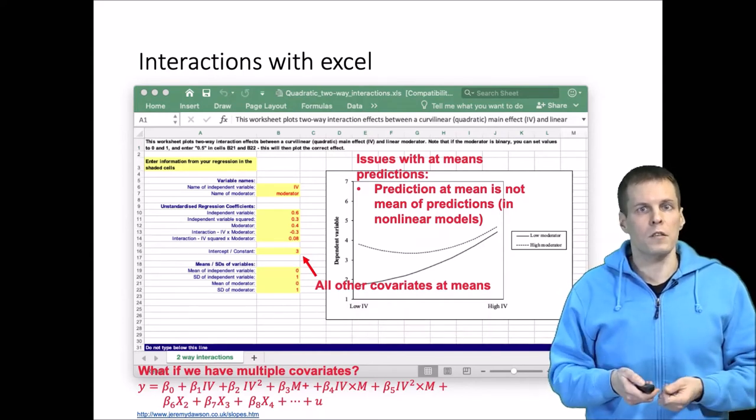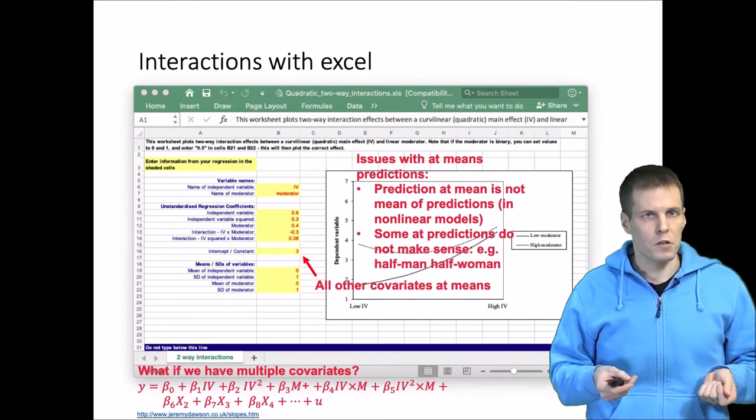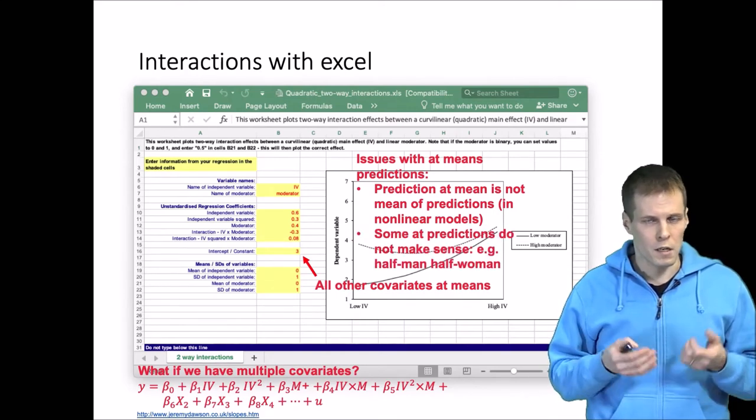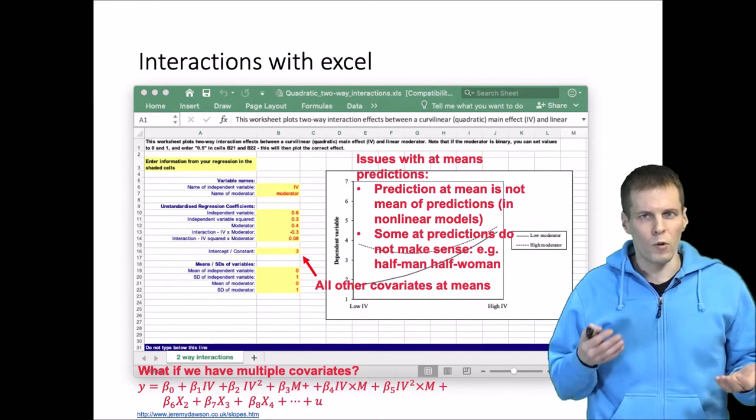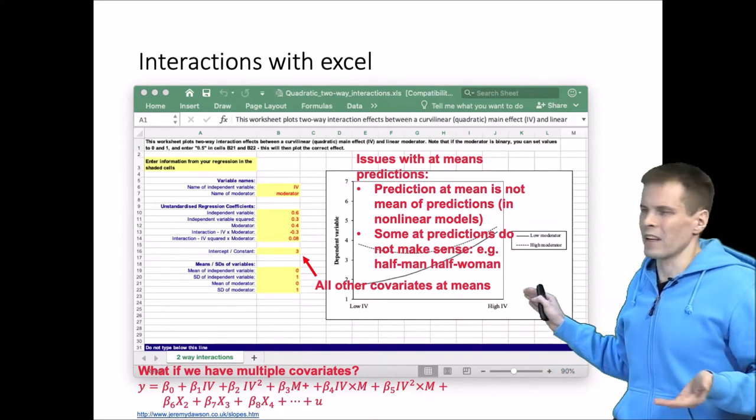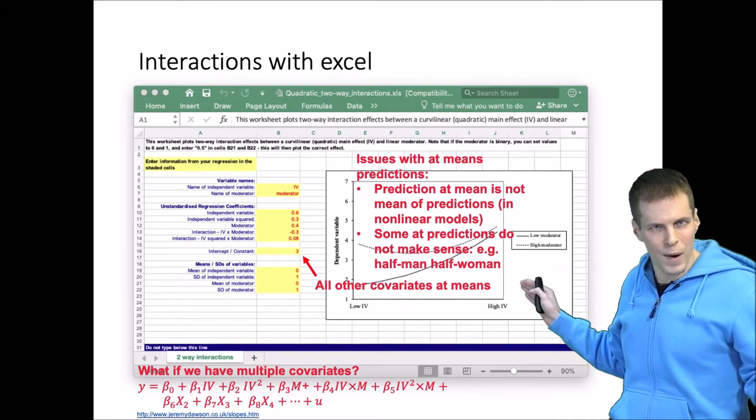Which brings us to the second issue, which is that some of these predictions that you would calculate using these Excel sheets don't really make sense. There is no such person that is half man and half woman.